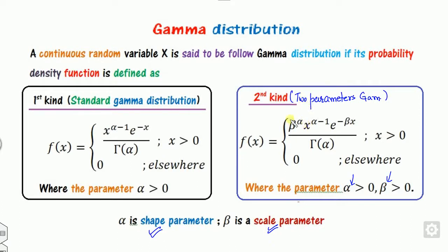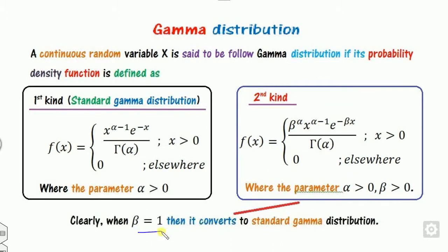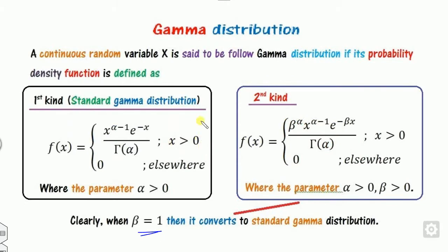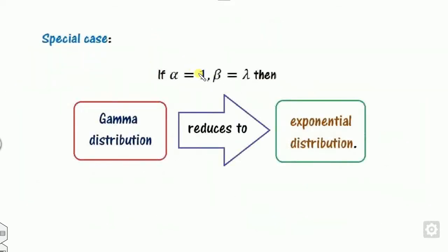The respective PDFs are given. You can analyze that if you substitute beta equals 1 in the two-parameter PDF, it reduces to the standard gamma distribution. So all results obtained for the two-parameter case reduce to the standard gamma when beta equals 1. Also, if we substitute alpha as 1 and beta as lambda, the gamma distribution reduces to the exponential distribution — the exponential distribution is a special case of the gamma distribution.